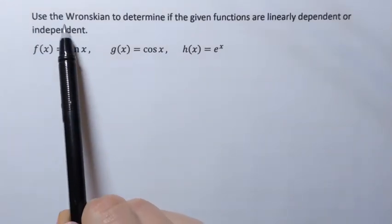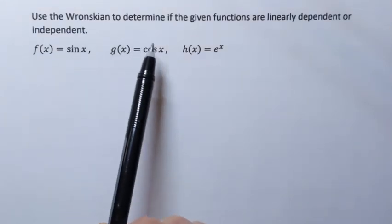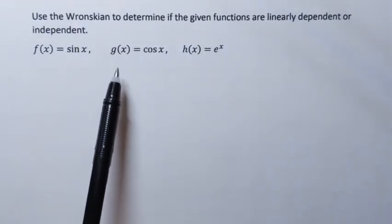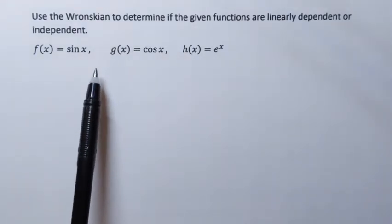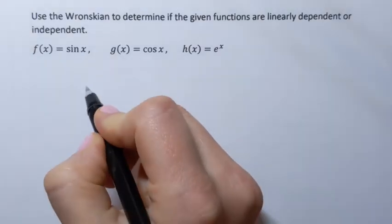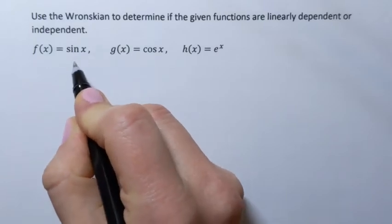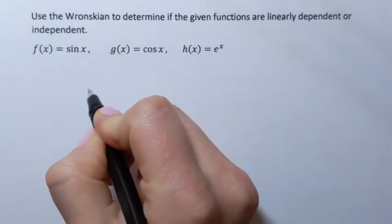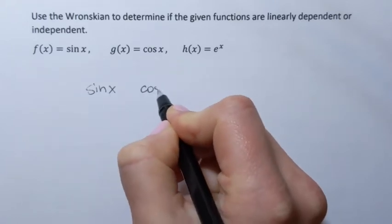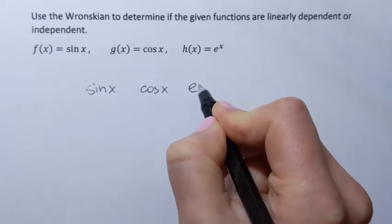In this example we're going to use the Wronskian to determine if the given set of functions is linearly dependent or independent. To start we're going to set up a matrix for which we'll have to find the determinant. The first row of the matrix will consist of the functions: sine of x, cosine of x, e to the power x.